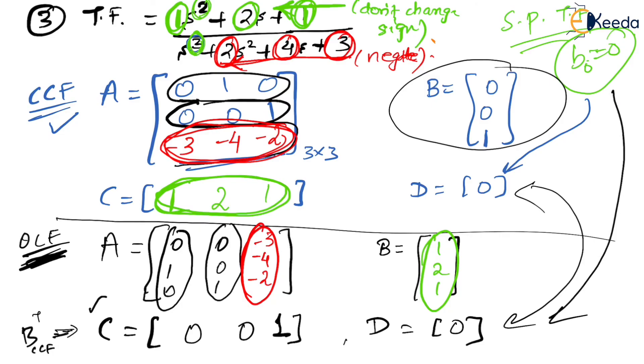So these were the few examples related to the controllable canonical form and the observable canonical form. Thank you.